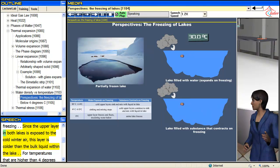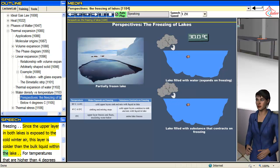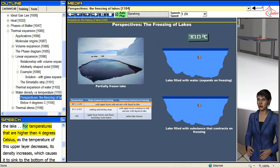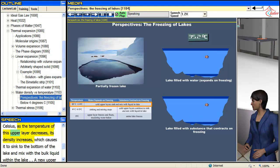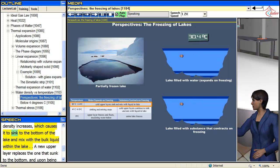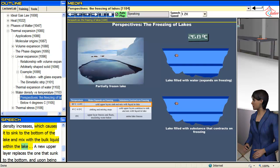Since the upper layer in both lakes is exposed to the cold winter air, this layer is colder than the bulk liquid within the lake. For temperatures that are higher than 4 degrees Celsius, as the temperature of this upper layer decreases, its density increases, which causes it to sink to the bottom of the lake and mix with the bulk liquid within the lake.